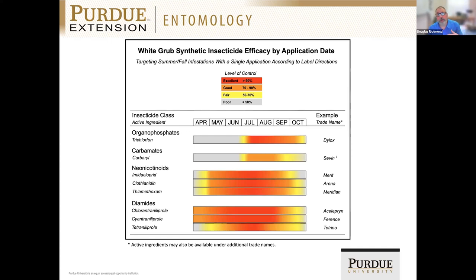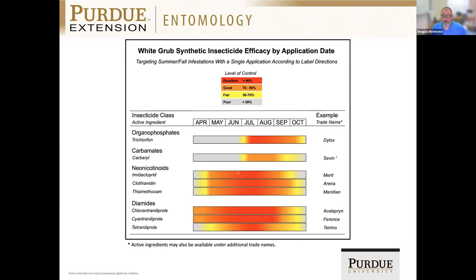Another way to think about this is efficacy by time of application. If we look at something like trichlorfon — Dylox — we know it's a good grub insecticide, but it's really best if we're targeting those early instar grubs right after egg hatch. We see the best efficacy about mid-July, and that's true with just about every chemistry we have available for grub insecticides. My data repeatedly shows that mid-July is about the best time to make an application. That doesn't fit very well with some of our operations, so we have to rely on some other chemistries if we're going to make our rounds earlier, say in June, which is pretty typical for a lawn care operator. Our neonicotinoids and diamides give us an opportunity to do that.